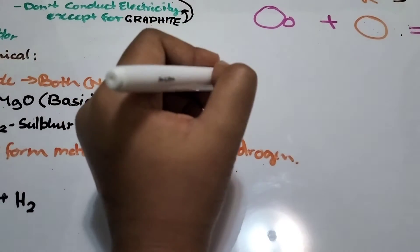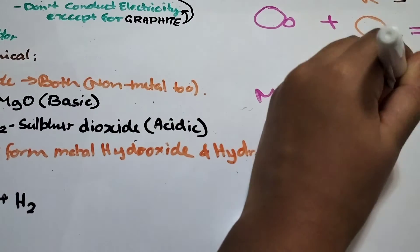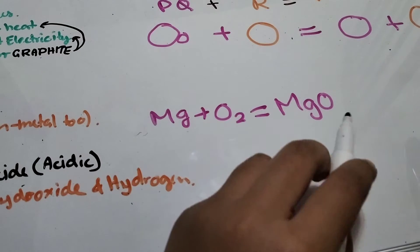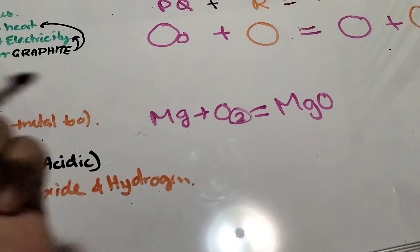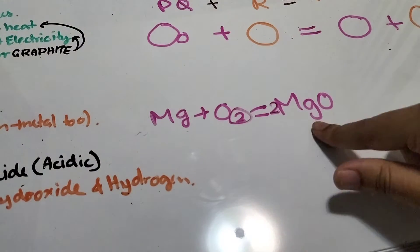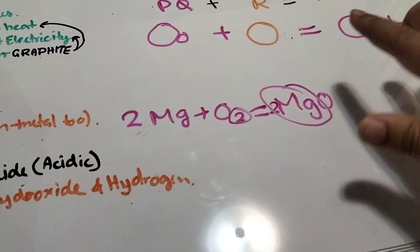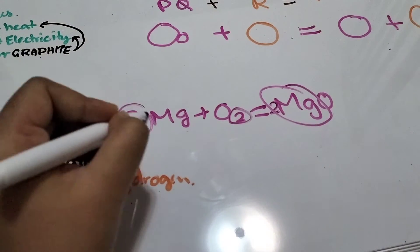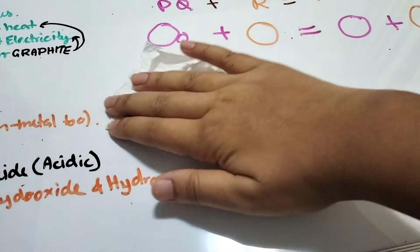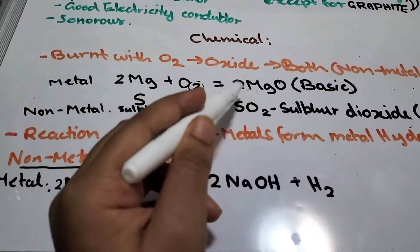To balance the equation: Mg + O₂ = MgO. The two from O₂ disappears on the product side, so we need to balance it. We put a 2 in front of Mg on the left, giving 2Mg + O₂ = 2MgO. Now there are two magnesiums on both sides, so the equation is balanced. We use these coefficients for balancing. If you don't understand this, don't worry — it's a little beyond the current syllabus.